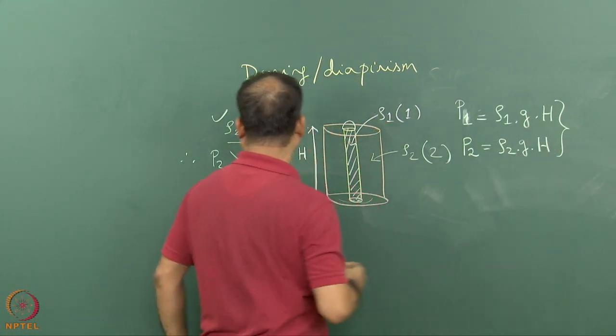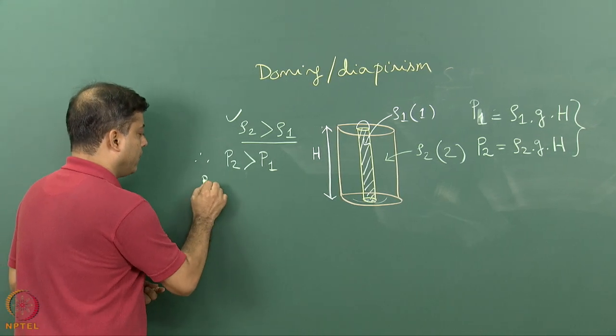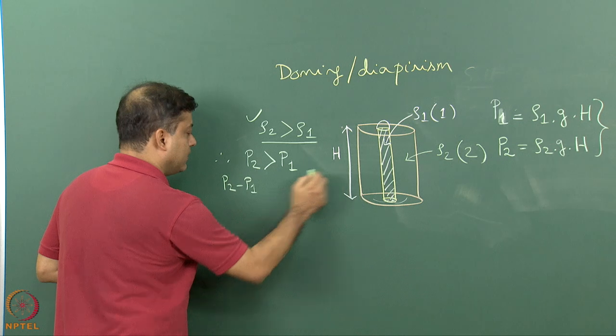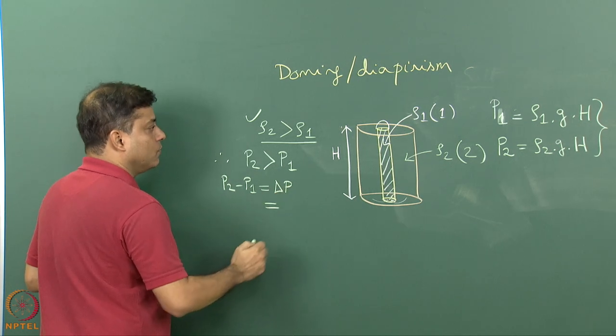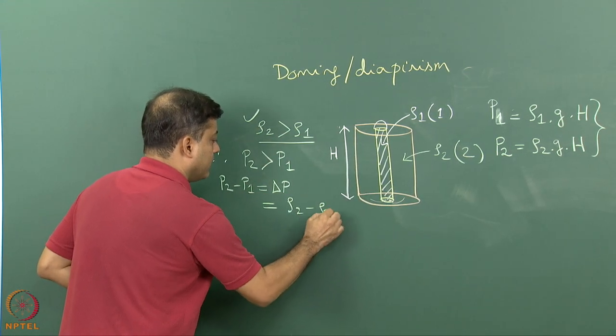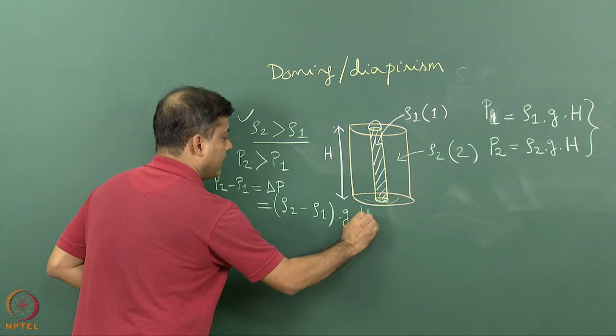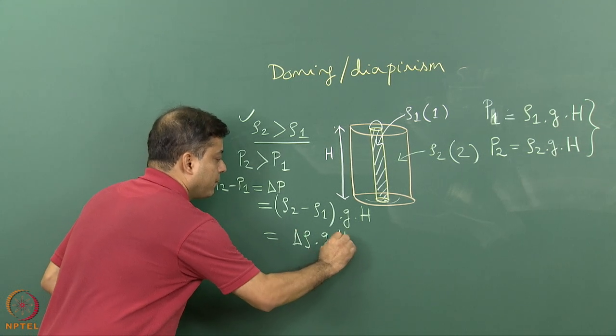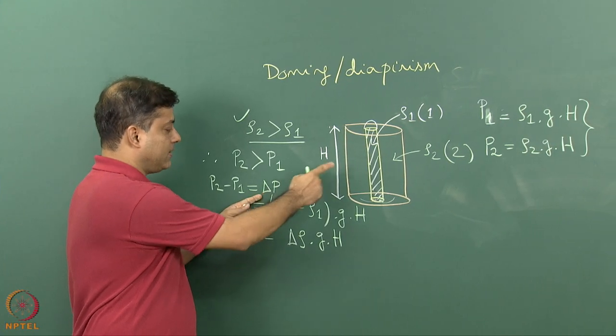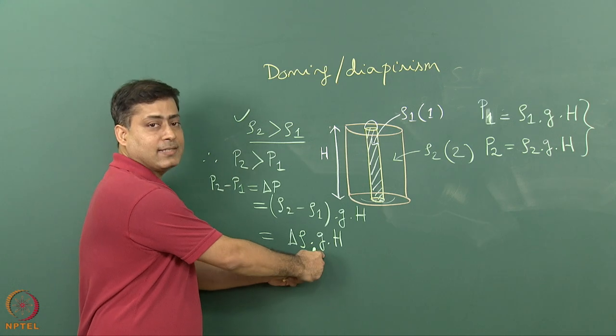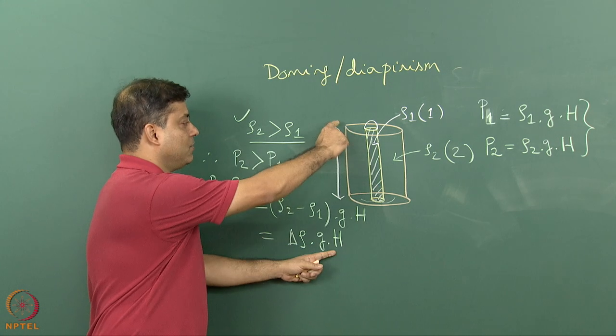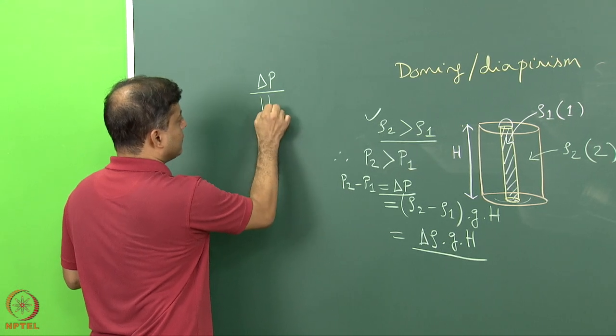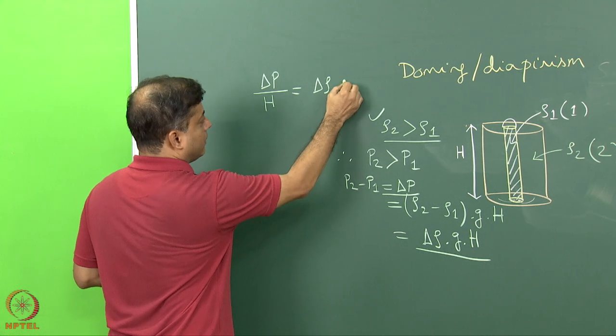Since I consider rho two more than rho one, I can say p two is more than p one. The pressure difference that will drive fluid two inside the internal hollow cylinder is delta p equals rho two minus rho one into g multiplied by H. This is the density difference, so we can write it as delta rho into g into H. We can further say that delta p divided by H equals delta rho multiplied by g.